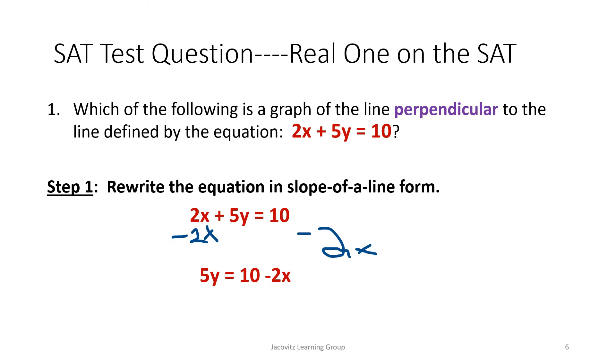Now it says, which of the following is a graph of the line perpendicular to the line defined by the equation 2x + 5y = 10? This is an SAT question taken from an SAT given two years ago. As we said before, y has to be on its own side because it's y = mx + b.